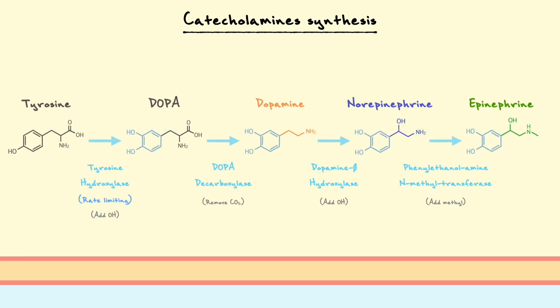In a condensed way, the pathway looks a bit like this, where on top you have the substrate names and below the respective enzymes that catalyze each reaction. One important thing to note is that the neurons that release either dopamine, norepinephrine, or epinephrine do not necessarily have all of the enzymes. For example, a neuron that releases dopamine will only have up to DOPA decarboxylase, whereas a neuron that releases epinephrine will have up to PNMT.